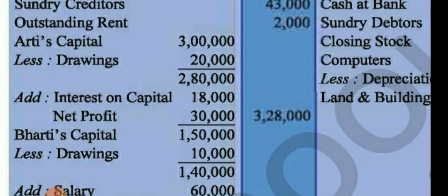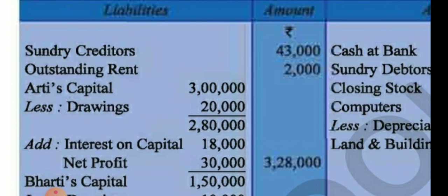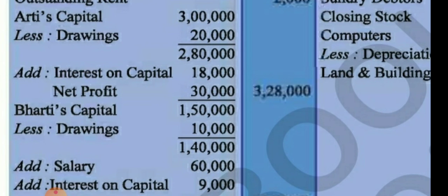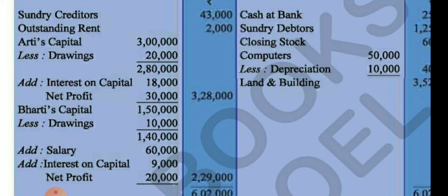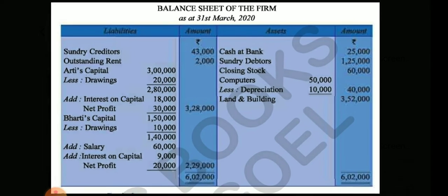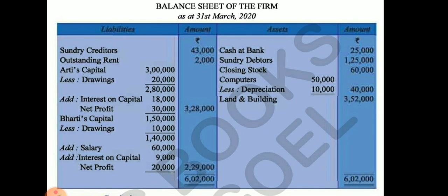In the case of sole trade we only show one capital account because there is only one person — we add net profit, add interest on capital, and less drawings. But here there are two partners, so we show both capitals separately. This is how we present the final accounts of a partnership, including the balance sheet.